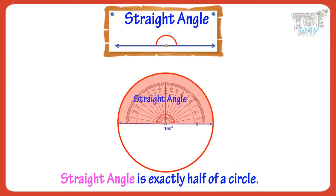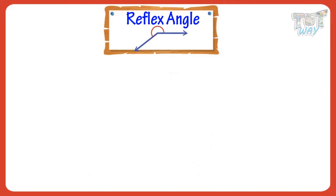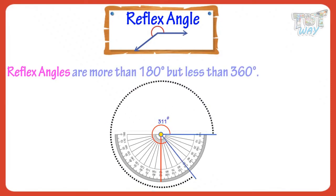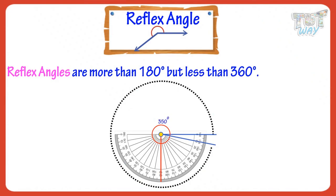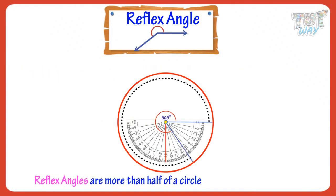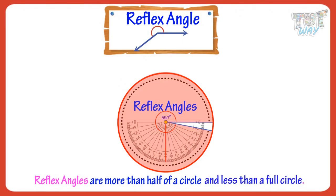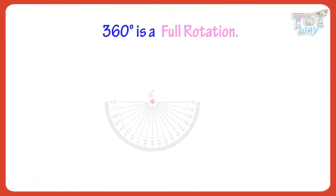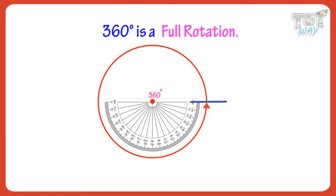Now, let's see what are reflex angles. Reflex angles are more than 180 degrees but less than 360 degrees. So, reflex angles are more than half of a circle and less than a full circle. And 360 degrees is a full rotation, a full circle.